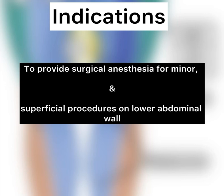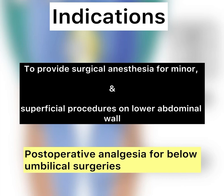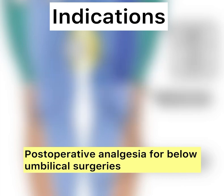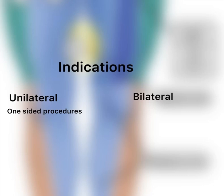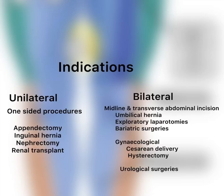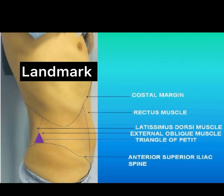TAP block is most often used to provide surgical anesthesia for minor surgery and superficial procedures on the lower abdominal wall, and for post-operative analgesia for below-umbilical surgeries — unilateral or bilateral. Unilateral indications include appendectomy and inguinal hernia repair; bilateral indications include umbilical hernia, bariatric surgeries, exploratory laparotomy, cesarean section, and urological procedures.